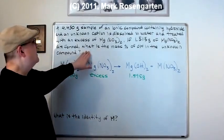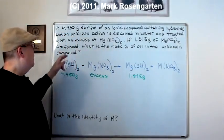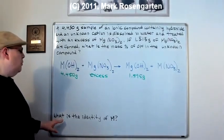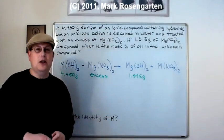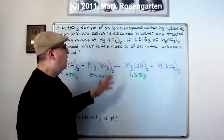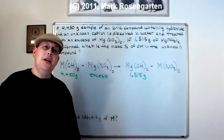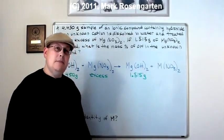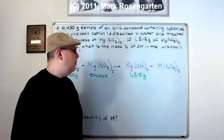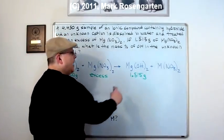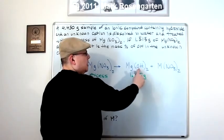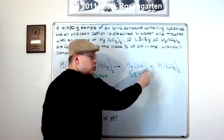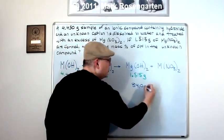When we react it with an excess of magnesium nitrate, what that's telling us is that we have more than enough magnesium nitrate to remove every last hydroxide ion from every single metal ion. The idea here is to rip the hydroxide off of this metal so that we can figure out the identity. This is what's called qualitative analysis. So in order to figure out what the mass of hydroxide is, I first need to know what percent of the total formula mass of this compound is the hydroxide making up. Then I can take that percent of 1.515.